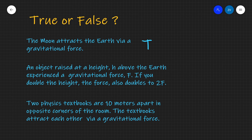The second statement is false. The third and final statement says that two physics textbooks which are 10 meters apart in opposite corners of the room attract each other via a gravitational force — this statement is also true. But how do we know whether each of those statements is true or false?